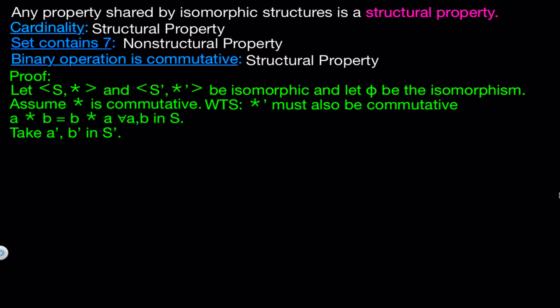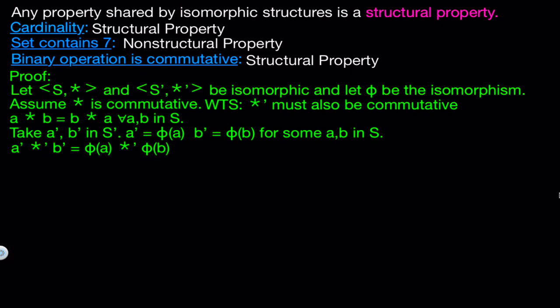Now if we take any a prime and b prime in s prime, we know that a prime equals phi of a for some a in s, and b prime equals phi of b for some b in s. We know this since the function phi is one-to-one and onto. So now we can see that a prime star prime b prime is the same as writing phi of a star prime phi of b. And since phi is an isomorphism, it satisfies the homomorphism property. So from the homomorphism property, we know that phi of a star prime phi of b is the same thing as phi of a star b.